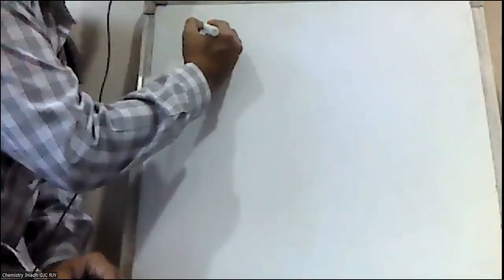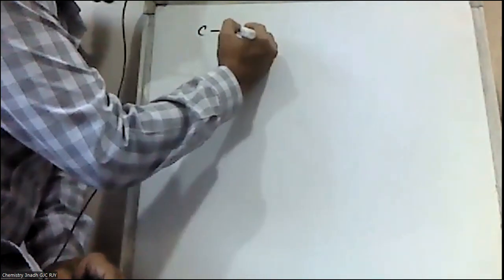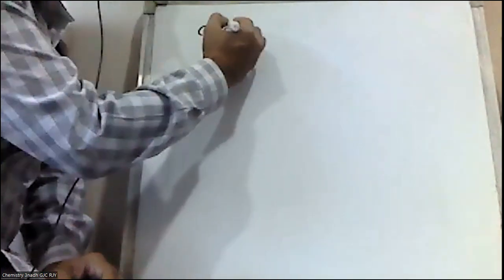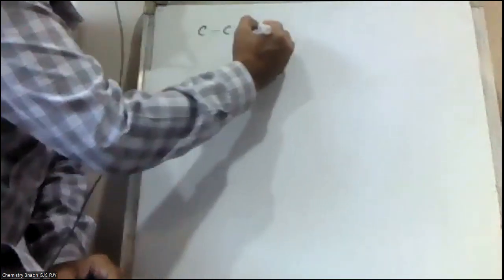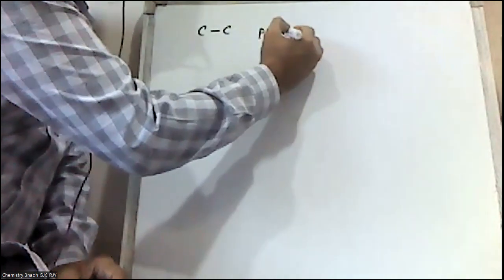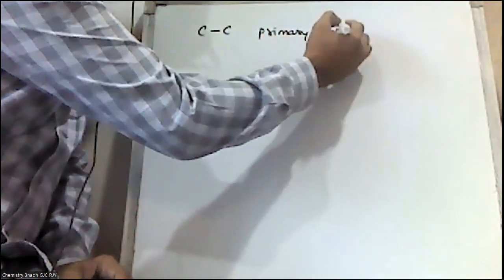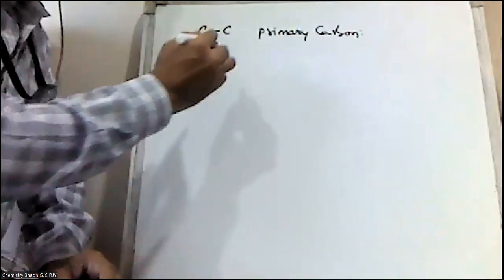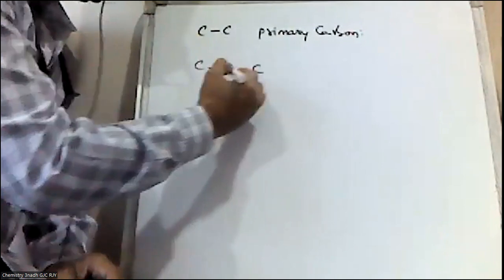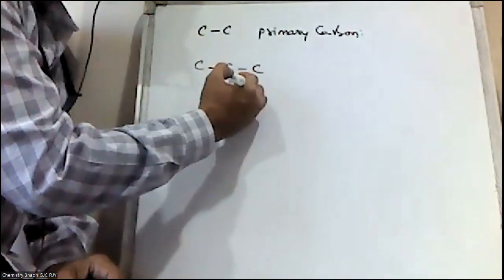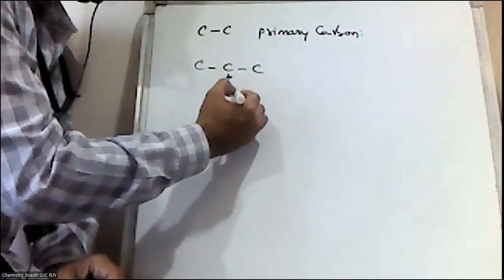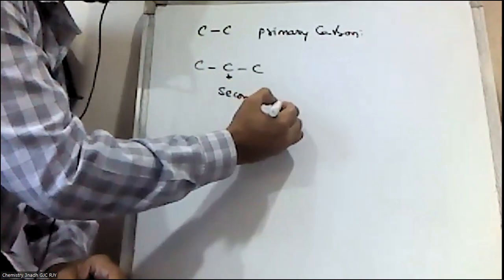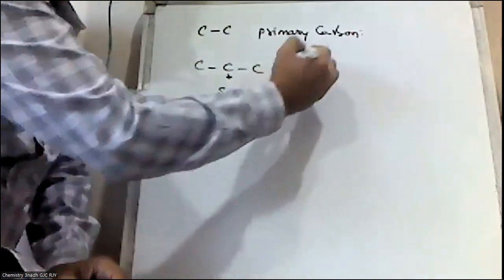Primary hydrogen is attached to the primary carbon. A carbon, if it is attached to only one other carbon, it is called primary carbon. It is denoted with 1 degree. If carbon is attached to two other carbons, it is called secondary carbon, denoted with 2 degree.